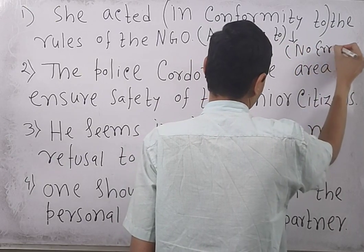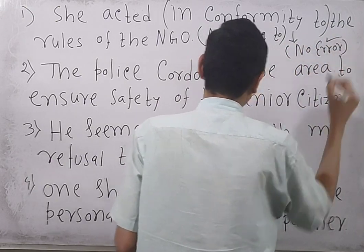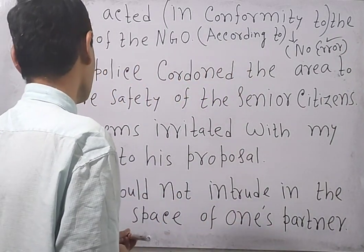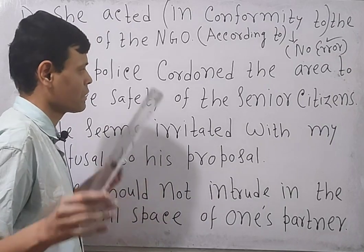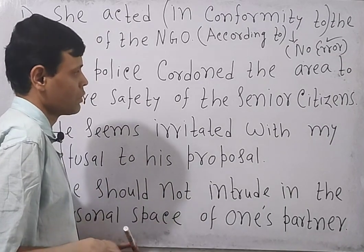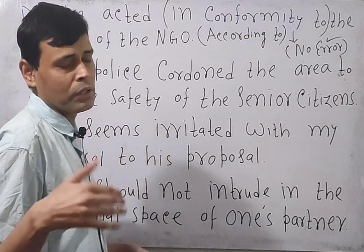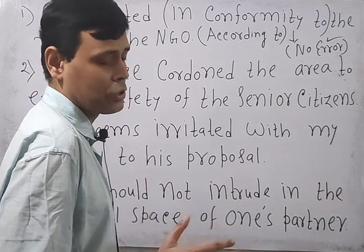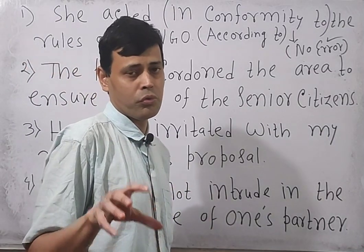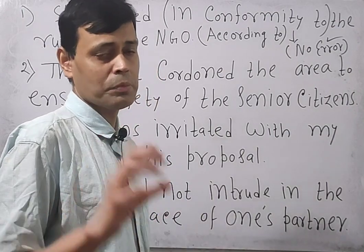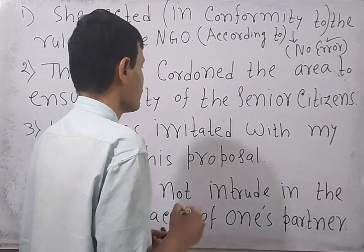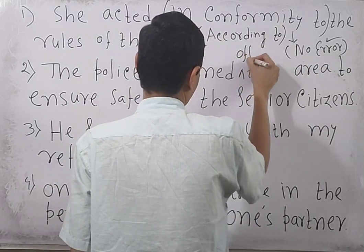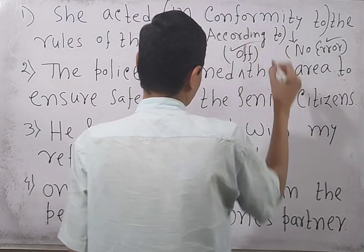Now go to the next sentence: 'The police cordoned the area to ensure safety of the senior citizens.' Whenever the police is going to protect some area, the writer should write 'cordoned off.' Here this preposition is missing — therefore 'off' should be there. In the exam, you need to select this correction. 'Cordoned off' means 'protected.'